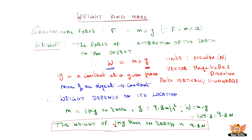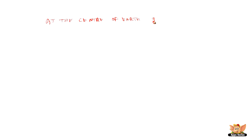That is the difference between weight and mass: mass is 1 kg whereas weight is 9.8 Newtons. Since g depends on location, weight also depends on location. At the center of the Earth, g is zero. So what will weight be? Irrespective of what the mass of the body is, weight is zero at the center of the Earth.